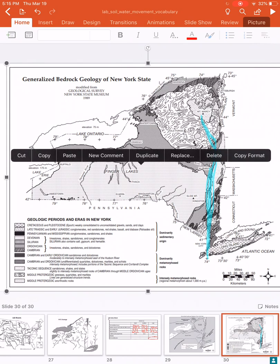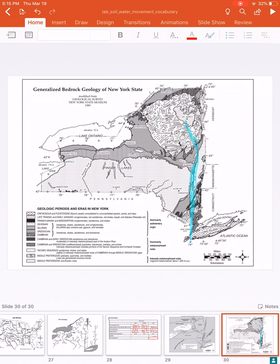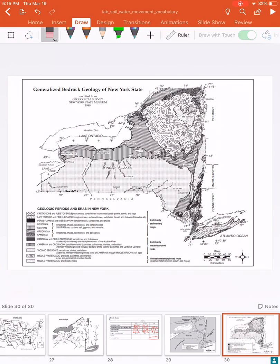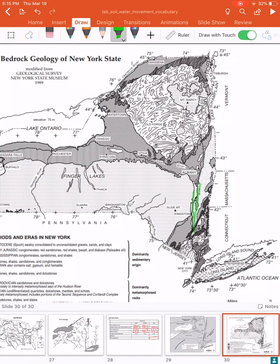Here we go with pages two and three of the reference table — I'll start on page three. We're now working on a New York State drainage map. I'll focus on the Hudson River first. Using the reference table, you can see the Hudson River is located all through here, flowing all the way down. I'll highlight it. That's your Hudson River in New York State. Use page three to find each river and trace and label it on the map.